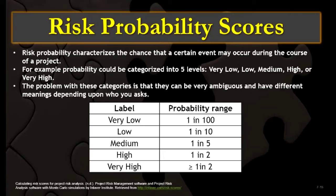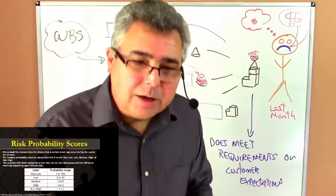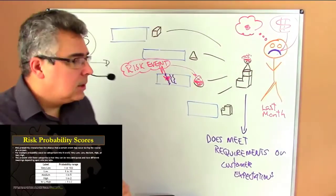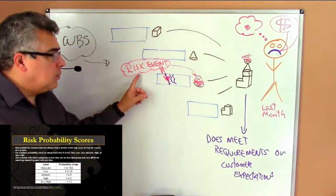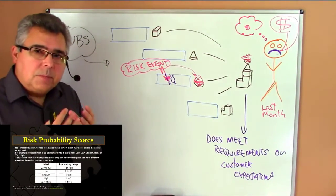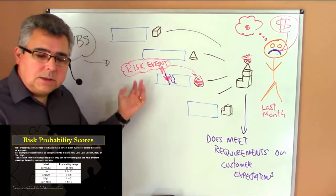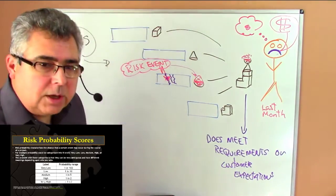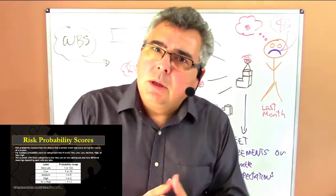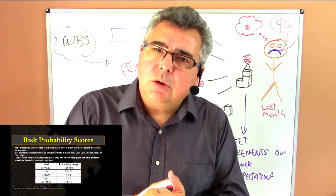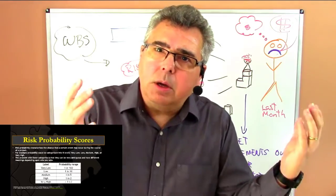So the probability scores — what we do usually is to understand, and I'll be repeating that because that risk event is uncertain, has a probability of occurrence. And how can I determine the probability of occurrence?